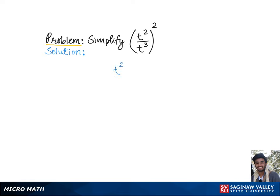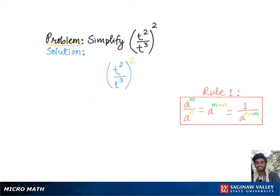To simplify t squared over t cubed, and the whole group squared, let's begin by working on the exponents inside the parenthesis using Rule 1, according to which we will get 1 over t raised to the 3 minus 2, and the whole group squared, which is equal to 1 over t raised to the 1, squared.